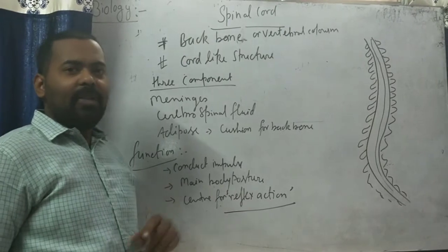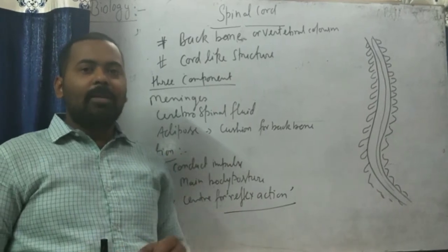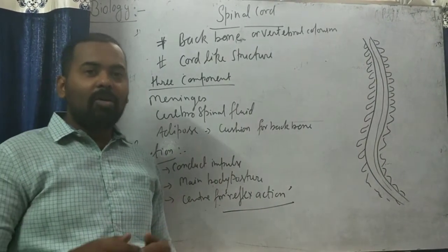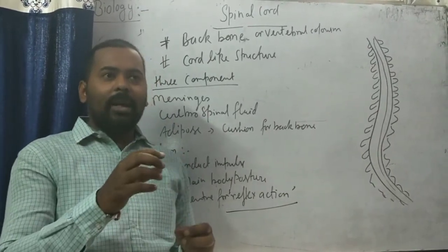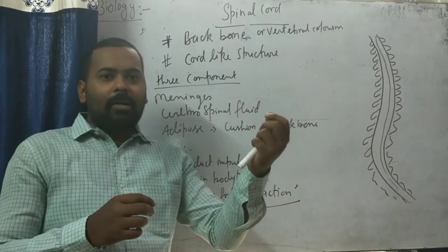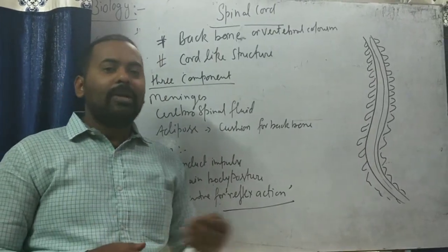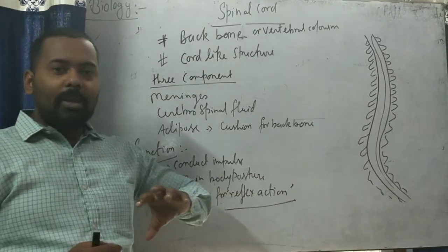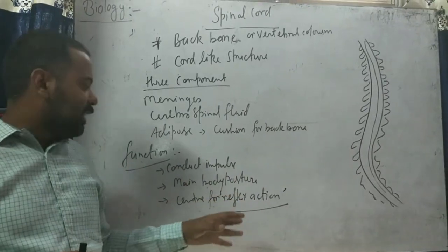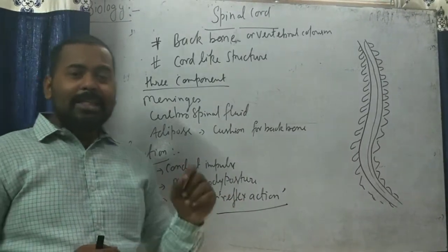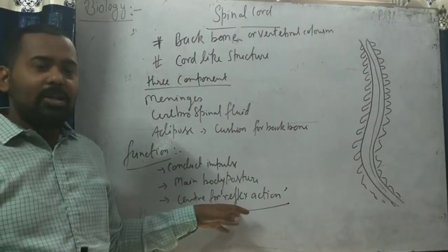The spinal cord is also the center for reflex action. Sometimes particular actions take place very smoothly and very quickly — like blinking of our eyes or jerking of our hand. When we touch a warm material or suddenly see crackers bursting nearby, we respond spontaneously. In these cases, impulses are not directly sent to the brain but are regulated by the spinal cord. This kind of action is known as reflex action. Sneezing, coughing, and some other actions are also controlled by the spinal cord.